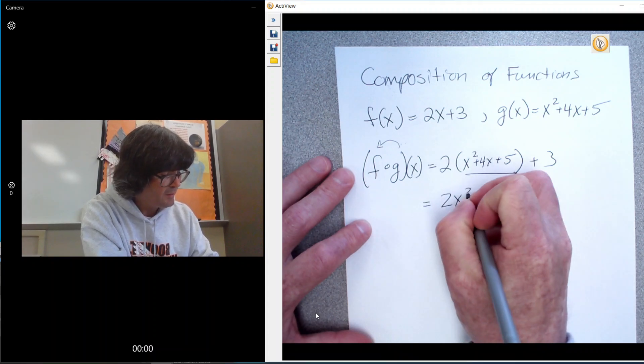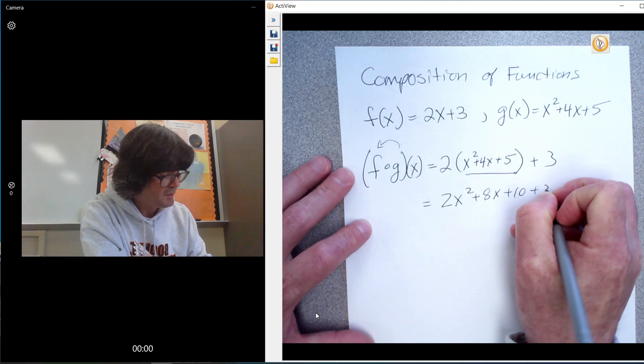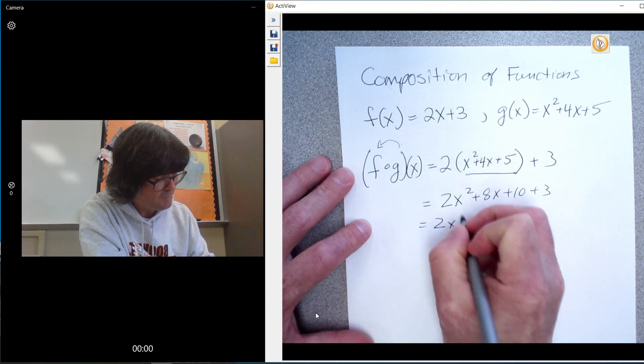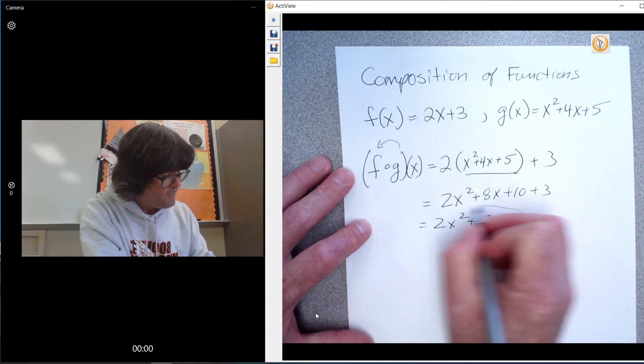2x squared plus 8x plus 10 plus 3 is just 2x squared plus 8x plus 13.